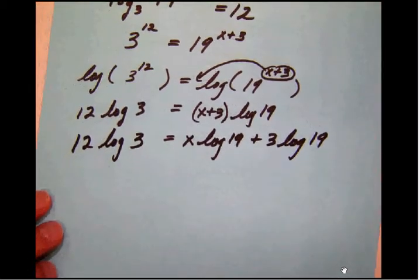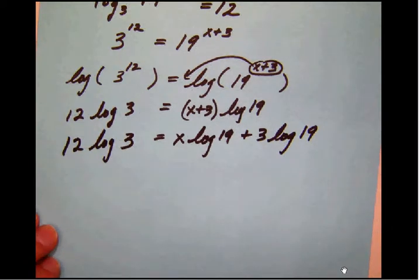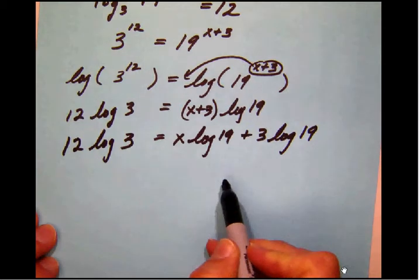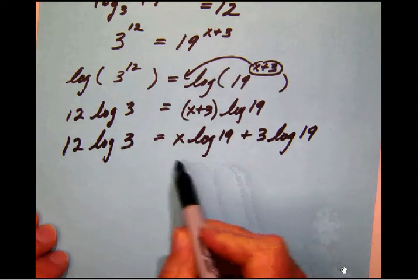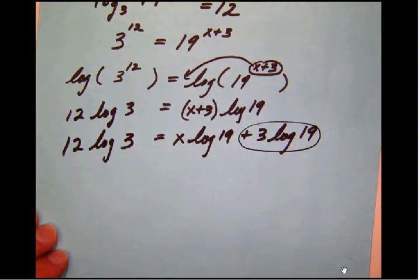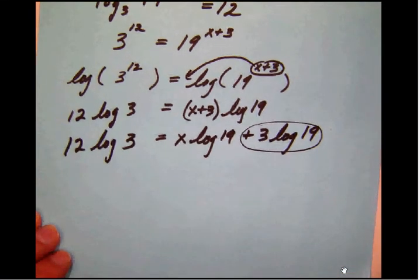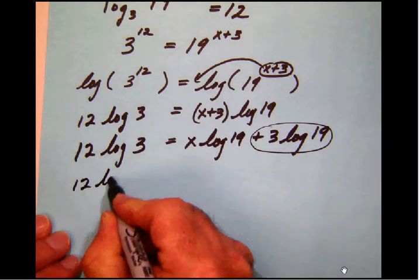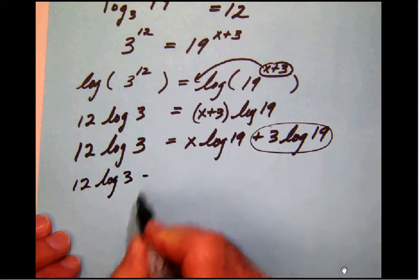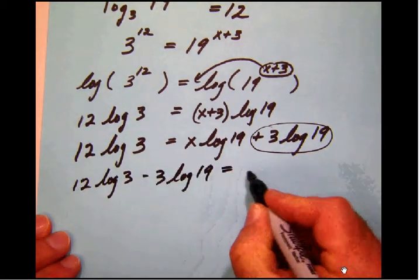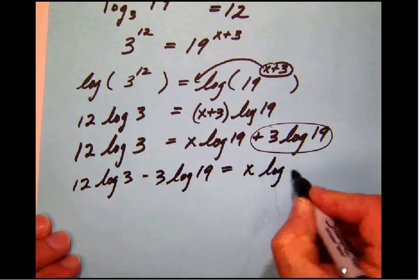So again, let's take a look at that. Notice here we're trying to get the x sorted out from everything else. So now that we have done this step, now we can move this term to the other side. Once again, begin to isolate more and more of that x term that we want. So we will have 12 log 3 minus 3 log 19 equals x log 19.